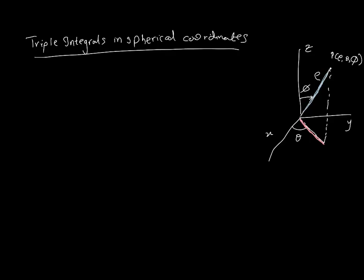Here's how it works: for the sake of argument, assume this length is r. The cylindrical coordinates give us x = r cosθ and y = r sinθ. Now if we look at this as a triangle, this length was r, this angle is phi, and this is a 90-degree angle because it's a perpendicular drop. So the z coordinate is in fact z = ρ cosφ.